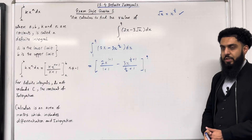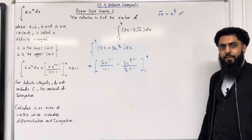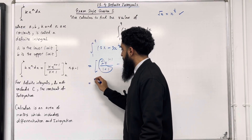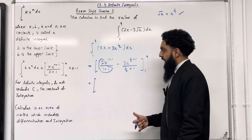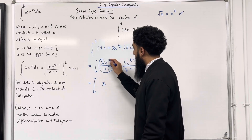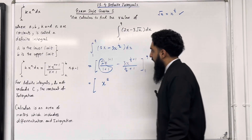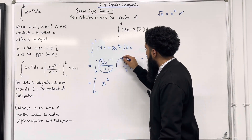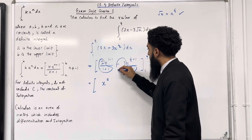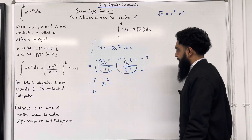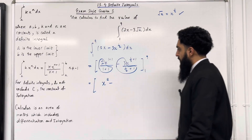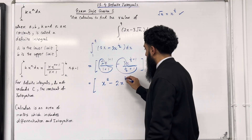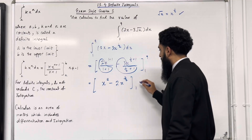We need to simplify the coefficients of each term. For the first term, we've got 2 divided by 1 plus 1, that would be 2 divided by 2, which is 1. So I can write x to the power 2. Now simplifying the coefficient of the second term: minus 3 divided by 1 half plus 1, that would be minus 3 divided by 3 over 2, which gives 2x to the power 3 over 2. Taking limits 1 to 9.